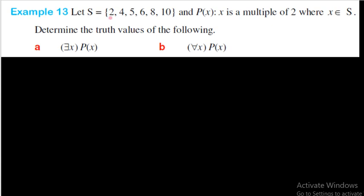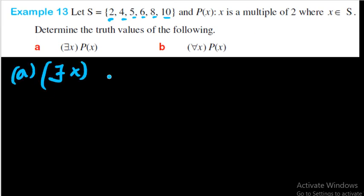The set S contains the numbers 2, 4, 5, 6, 8, and 10. This is the domain. The proposition P(x) says 'x is a multiple of two.' Then part (a) asks: there exists x, P(x) — in other words, is there a number x from the domain which is a multiple of two?